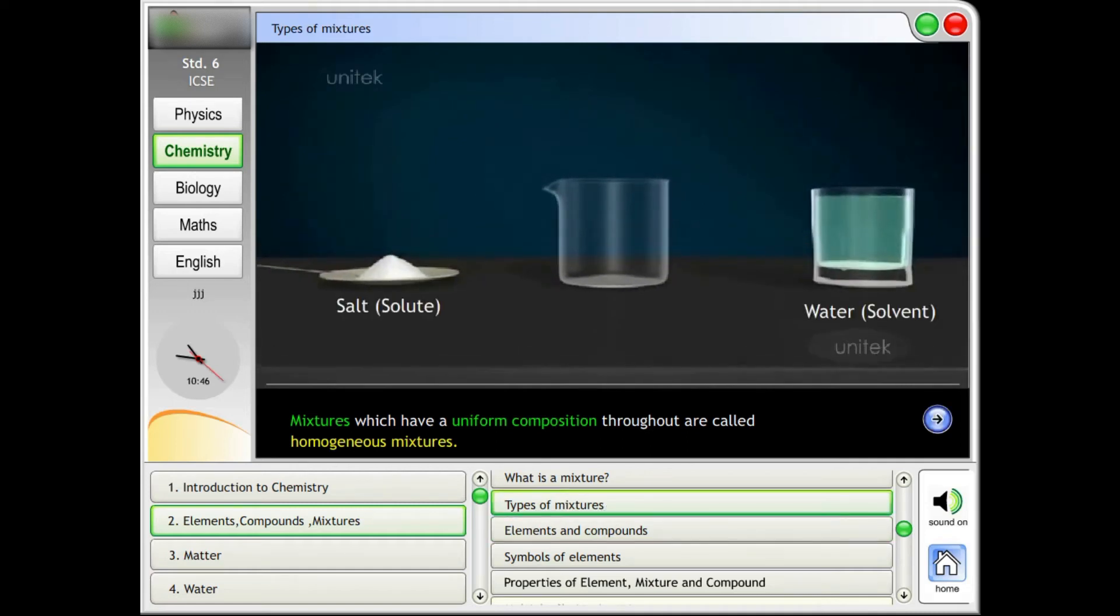Types of mixtures. Mixtures which have a uniform composition throughout are called homogeneous mixtures.